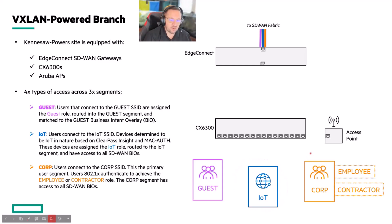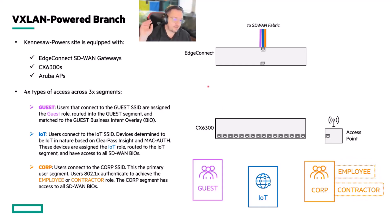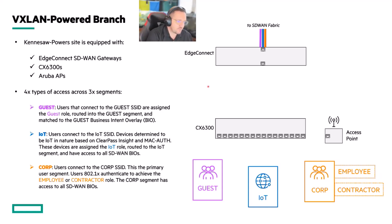And then finally, we have a third VRF called Corp that has two types of users: employee and contractor. Now, I do realize that this is vastly simplified — you usually have lots more roles and lots more complexity — but for just explaining things, let's go with this.